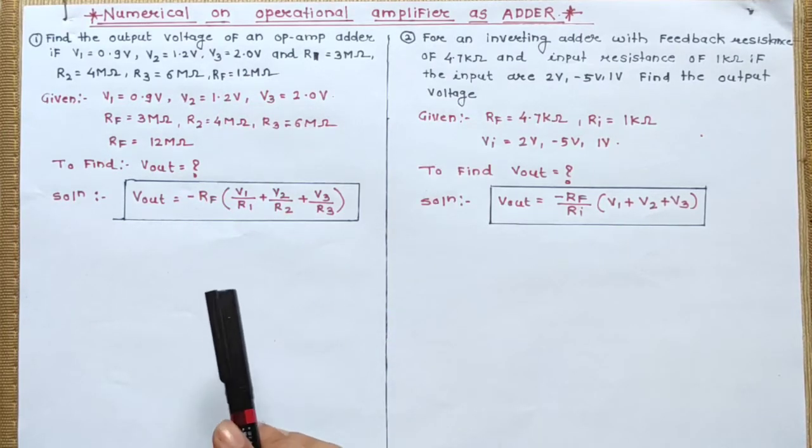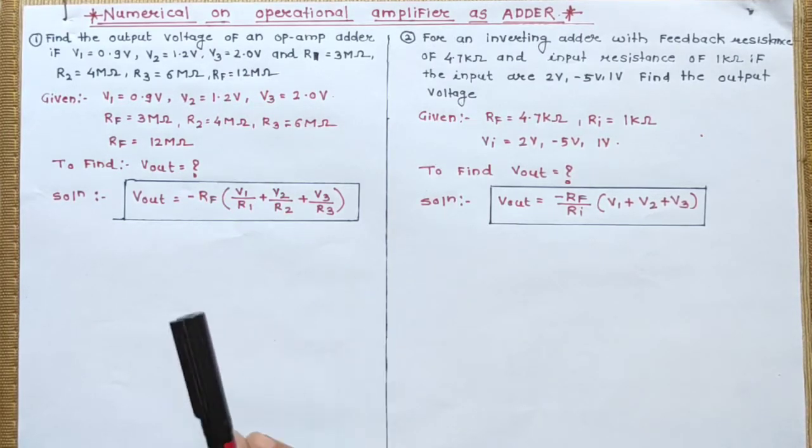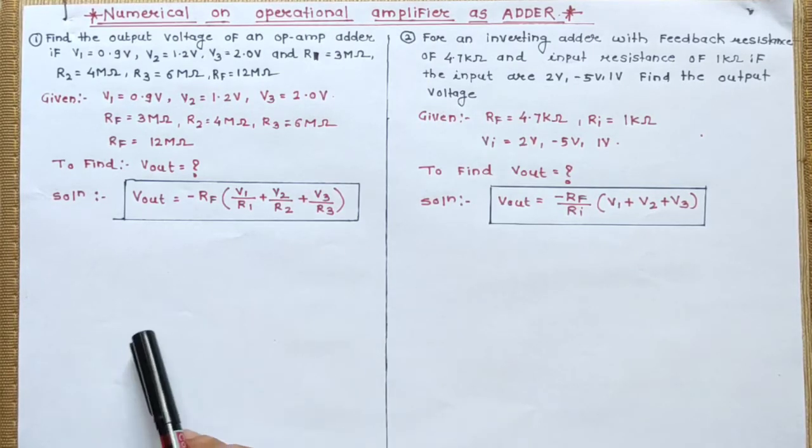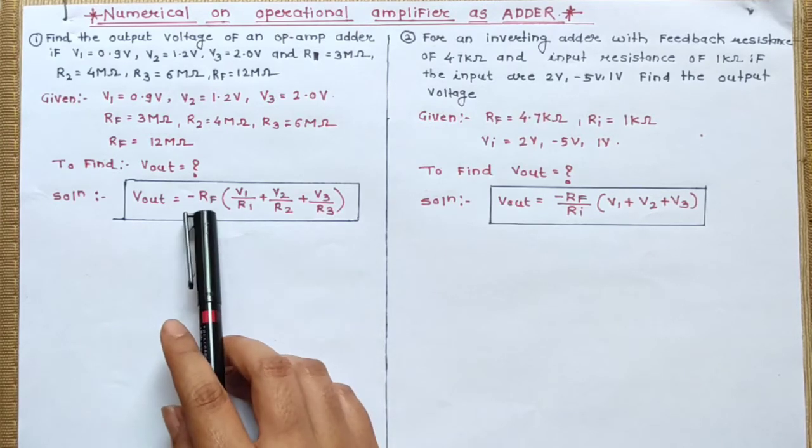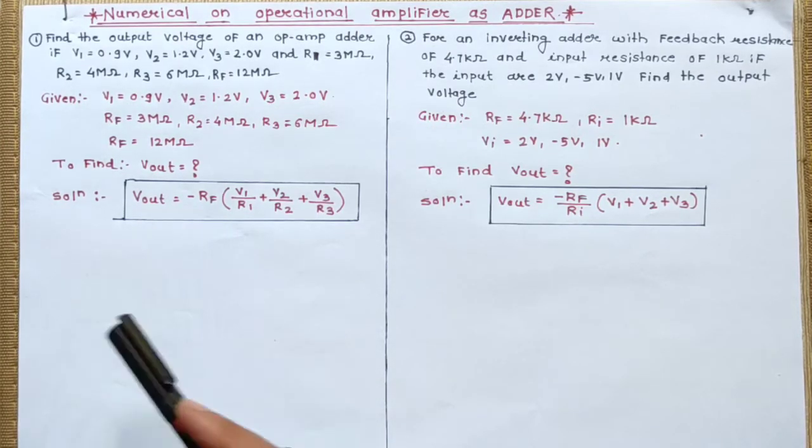So they are given directly the value of R1, R2, R3, Rf and V1, V2, V3. So here you have all the values given: input resistance values given, feedback resistance values given, and every input voltage values given. So you have to use the first formula.